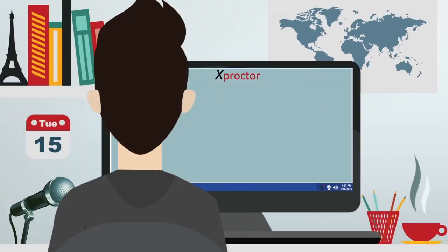X Proctor begins by putting an X in the tray to indicate that X Proctor is active. X Proctor starts by asking the learner to read a highlighted text out loud to capture the learner's voice. Then the learner starts the exam or quiz and X Proctor does its job in the background.